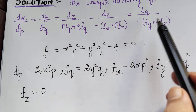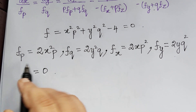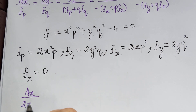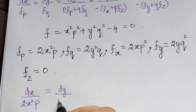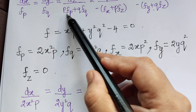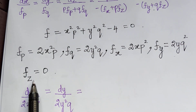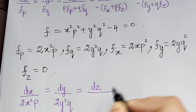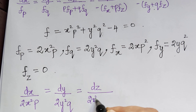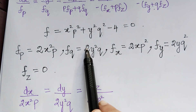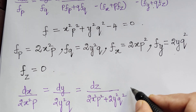Now we substitute each of these into the auxiliary equations. We get dx/(2x²p) = dy/(2y²q) = dz/(p·Fp + q·Fq). Since Fz = 0, this becomes dz/(2x²p² + 2y²q²). The denominator is p times Fp which is 2x²p², plus q times Fq which is 2y²q².